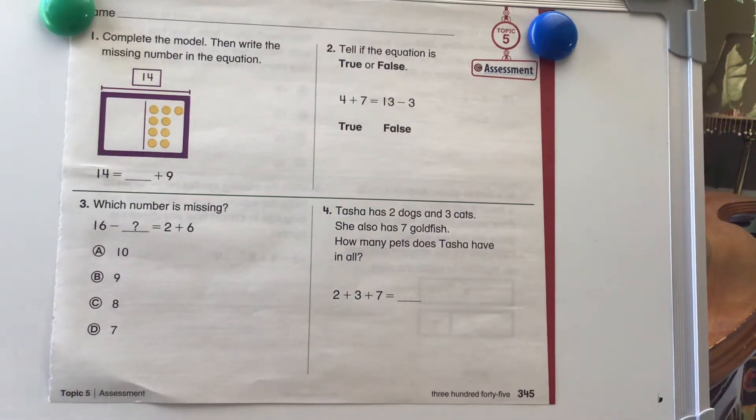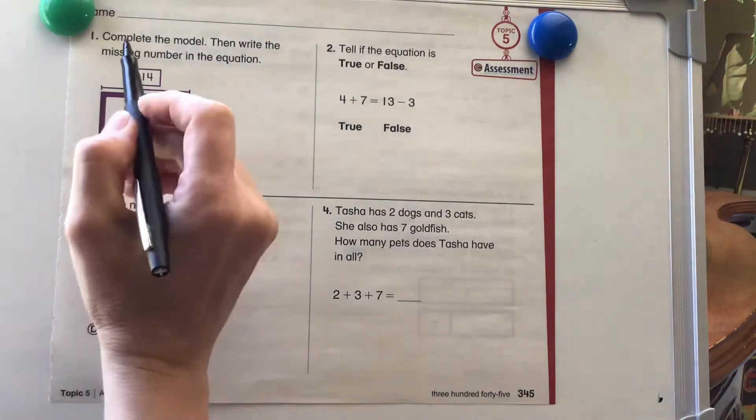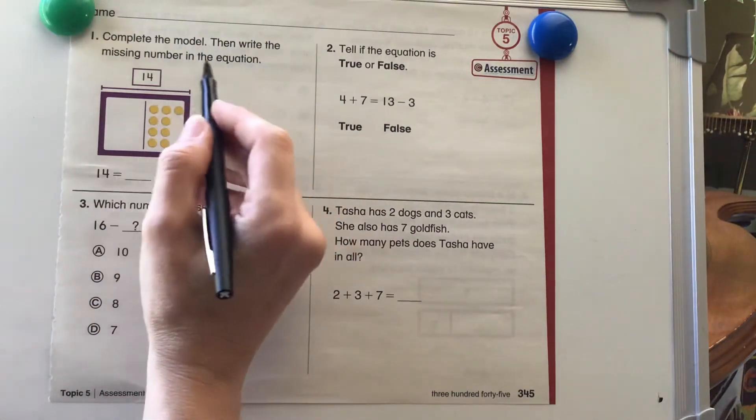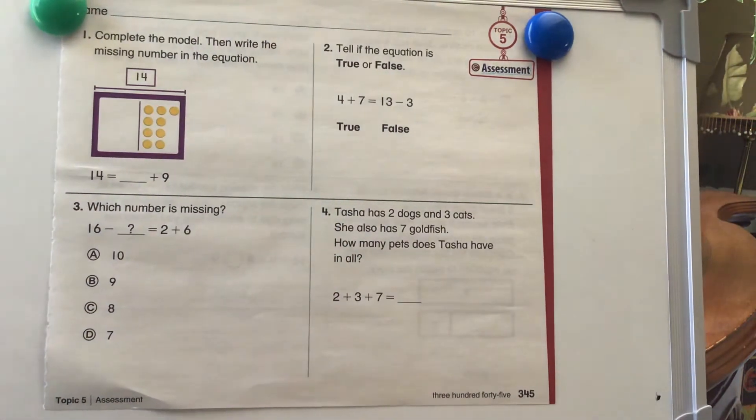All right, this is our first grade topic five assessment. So let's go through and do this together and kind of check how well we've mastered our material. What you can do is do the whole test by yourself and then turn it on and correct it, or you can do each question with me. I can read it, then you can pause it, and then you can check. Complete the model, then write the missing number in the equation.